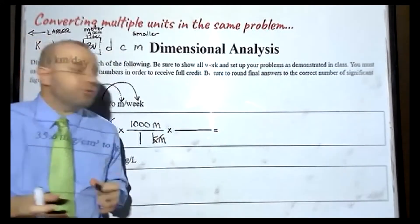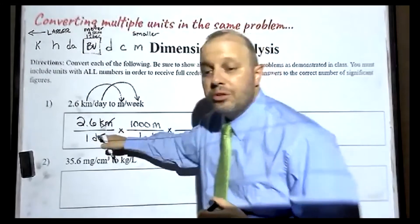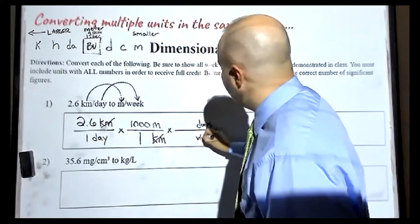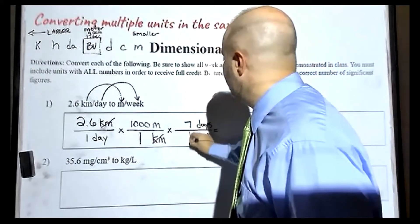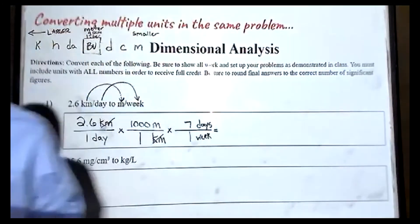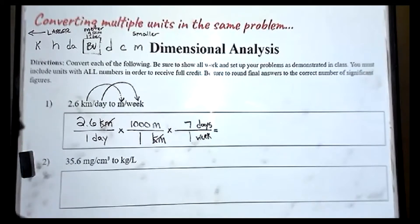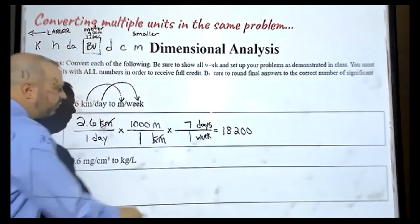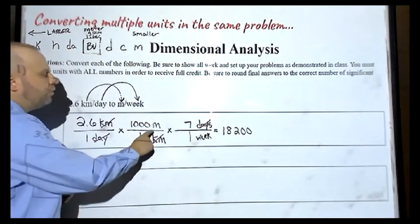This is the part that's going to be tricky for some of us, because we're trying to cancel out the unit of days. Days is on the bottom right now, so in order to cancel it out, we have to put it on the top of this fraction. And then we want to go to weeks, so we're going to put weeks on the bottom. Everyone knows there are seven days in a week, so we're going to put seven days, one week. Now the only thing we need to do is multiply through: 2.6 times 1,000 times 7, and we wind up with an answer of 18,200 meters per week.